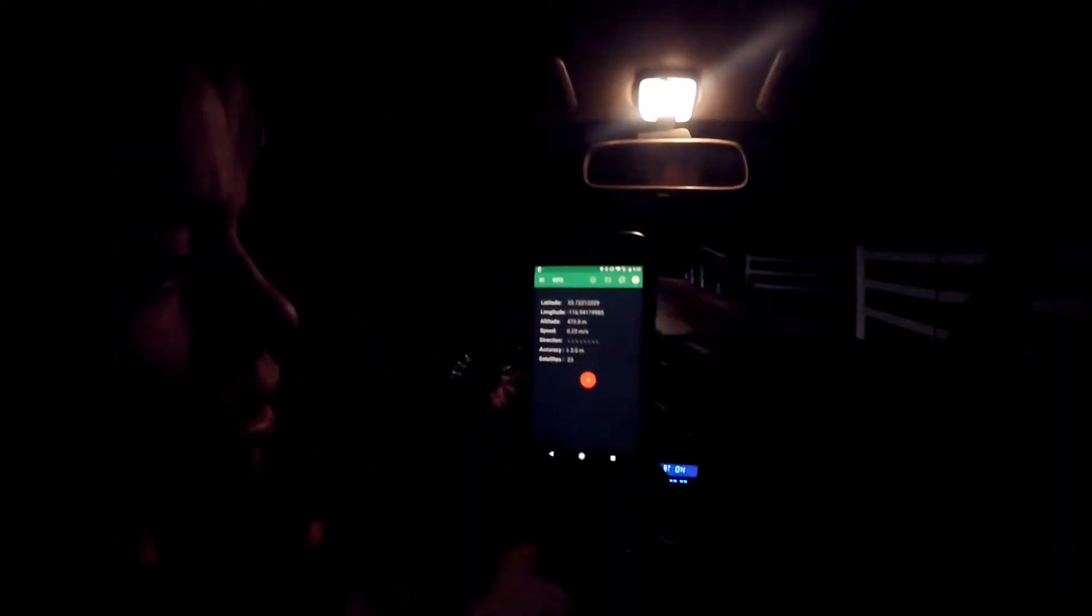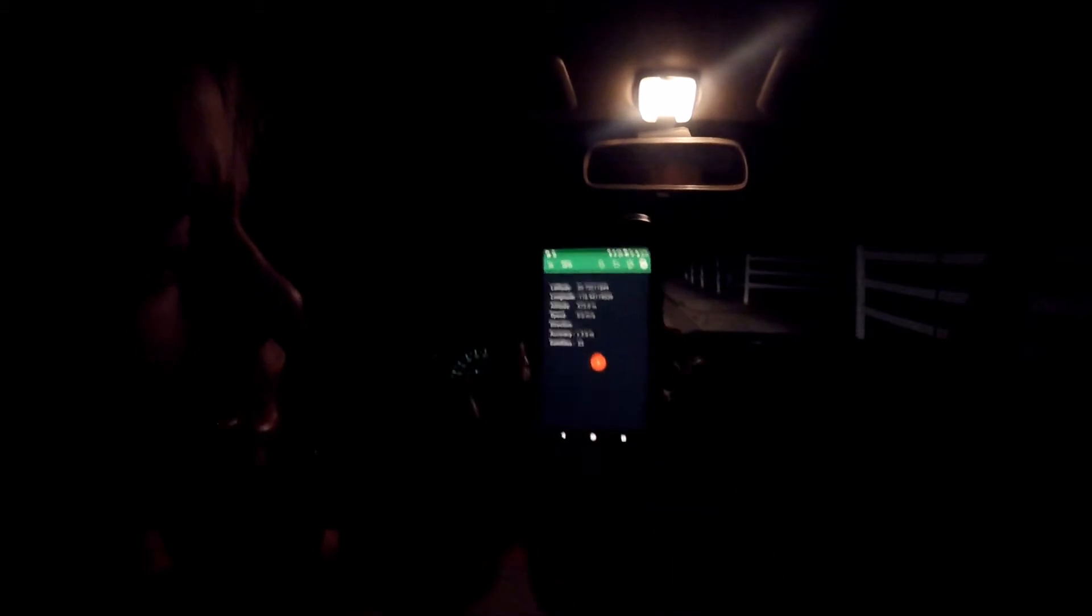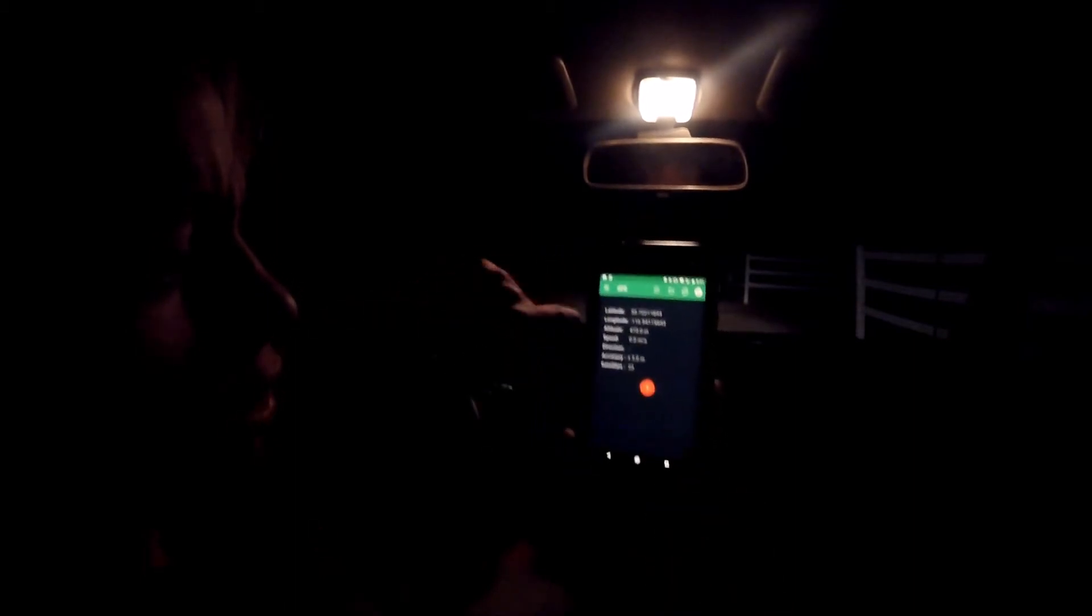Alright, so according to this GPS reading from my phone, we are approximately at an altitude of 473 meters. So we need to remember that because that's the height at the bottom of the hill. And we are going 0 meters per second. Now we are going to drive up to the top of the hill and record the altitude again.